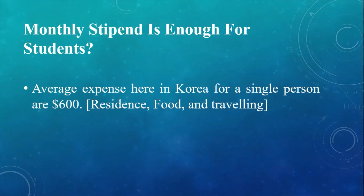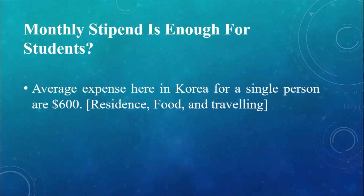Is the monthly stipend enough for international students? From my personal experience, the average expenses in Korea for a single student are around six hundred dollars — this covers room rent, food, and traveling, the three basic things. The major part goes to room rent because it is very expensive here. Food is almost two hundred to two hundred fifty dollars per month if you cook by yourself. If you want to eat outside, that may take you to five hundred dollars. Traveling depends on how much you want to travel on weekends.